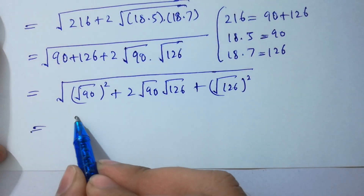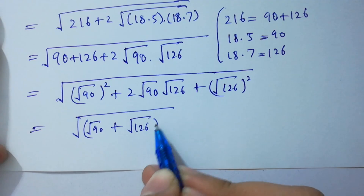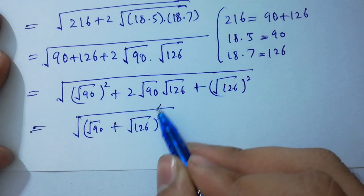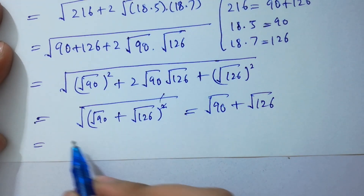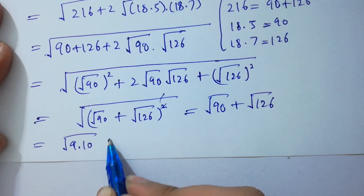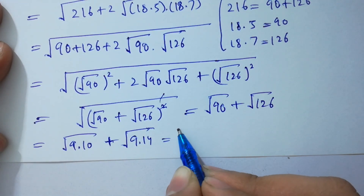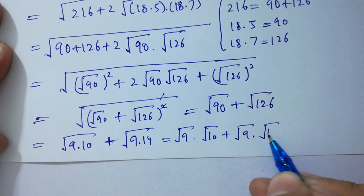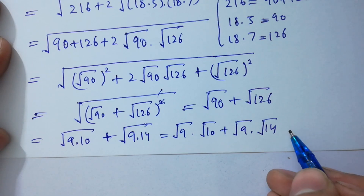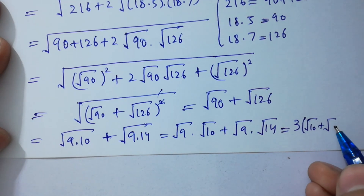So it becomes square root of (square root of 90 plus square root of 126) whole squared. The outer square root and square cancel, giving square root of 90 plus square root of 126. Since 90 equals 9 times 10 and 126 equals 9 times 14, we get square root of 9 times square root of 10 plus square root of 9 times square root of 14. Since square root of 9 equals 3, the answer is 3 times (square root of 10 plus square root of 14).